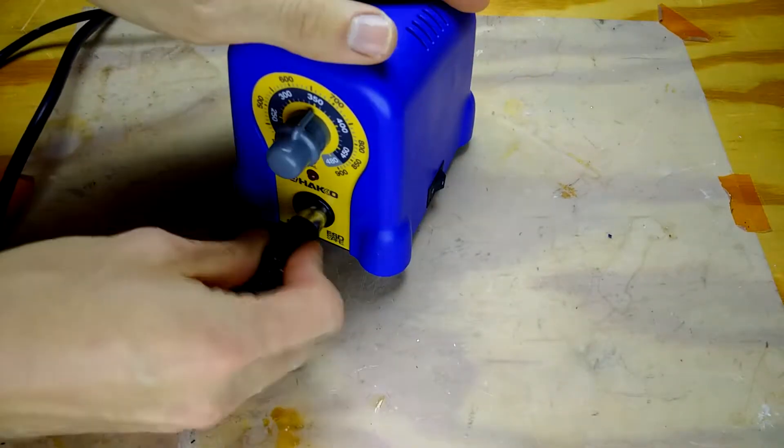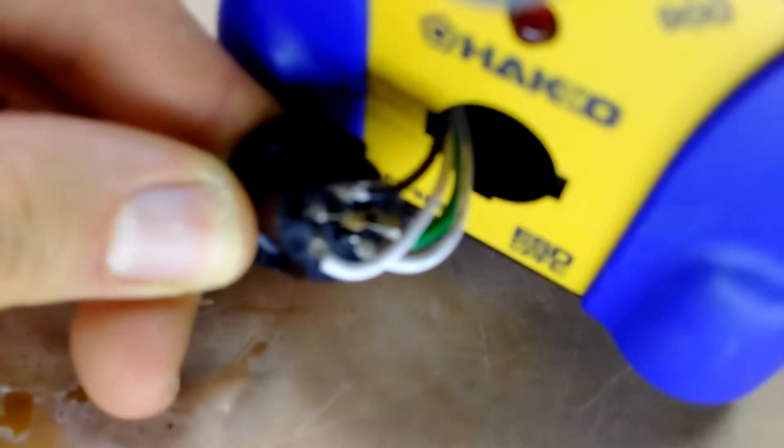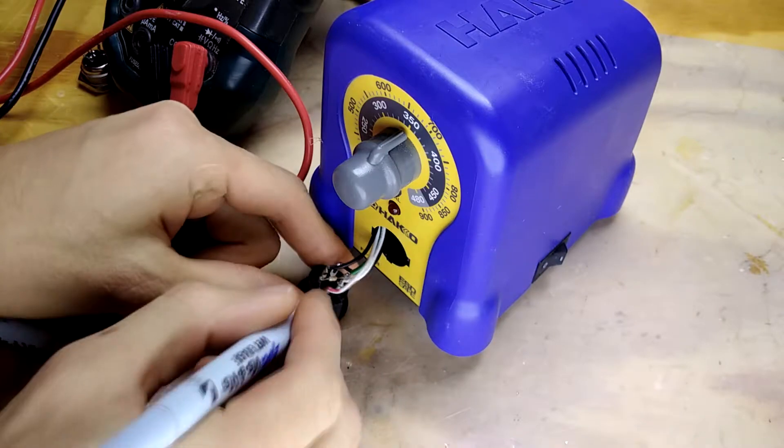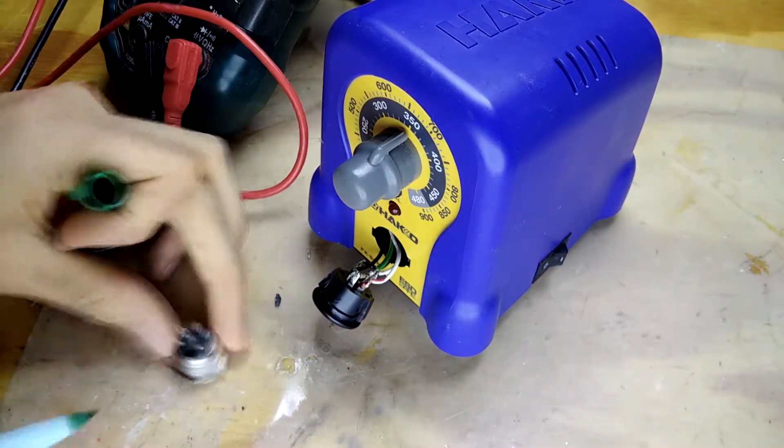First, I removed the connector from the soldering iron by prying the corner. This allowed me to mark the wires and desolder the old connector with an old Weller plug-in-the-wall iron.